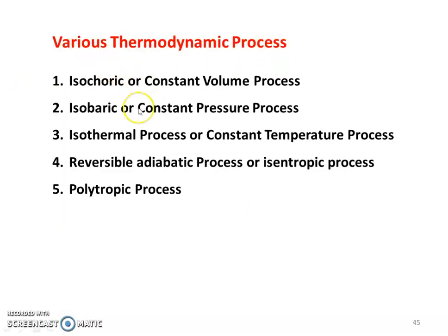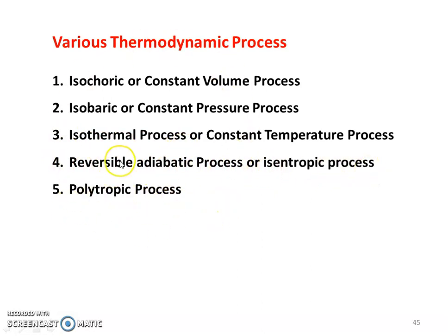The different types of Thermodynamic Processes are: Isochoric Process or Constant Volume Process, Isobaric or Constant Pressure Process, Isothermal Process or Constant Temperature Process, Reversible Adiabatic Process, Isentropic Process, and Polytropic Process. In the 5th process, we are going to study Chapter 1, which is the application of thermodynamics to the closed system, and we will discuss these 5 processes.